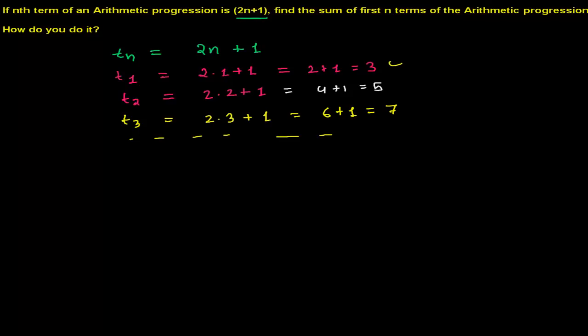So what you are getting here, you're getting your first term, second term, third term. This information is enough to calculate the sum of the first n terms. So here my first term, that is generally written as a, is 3.